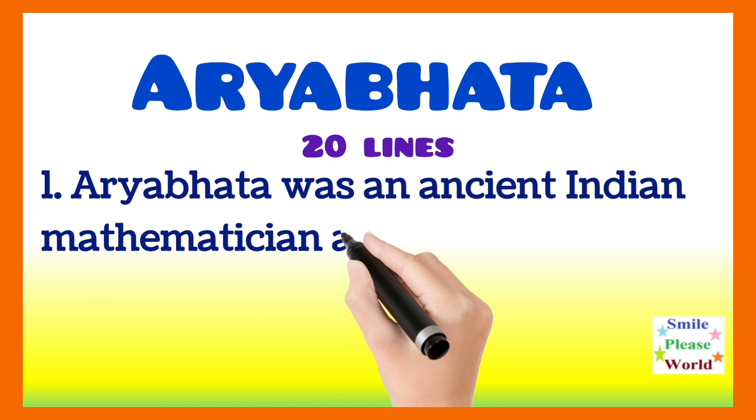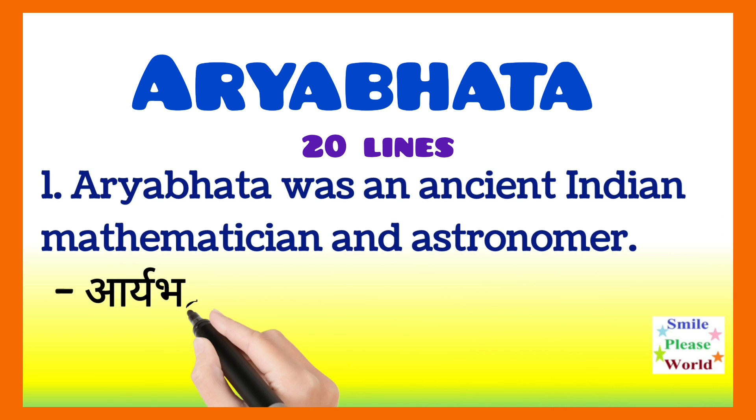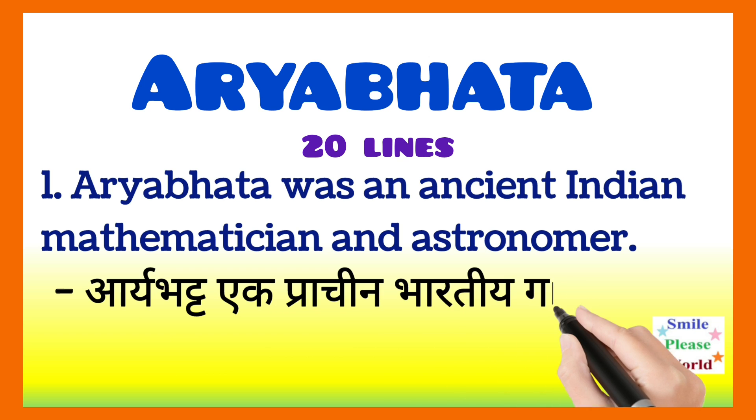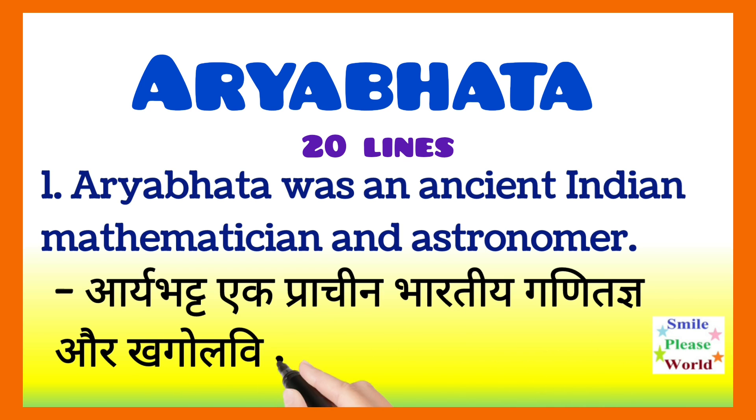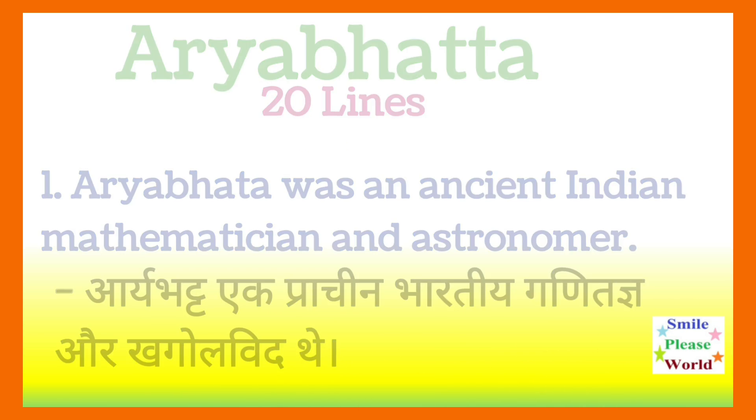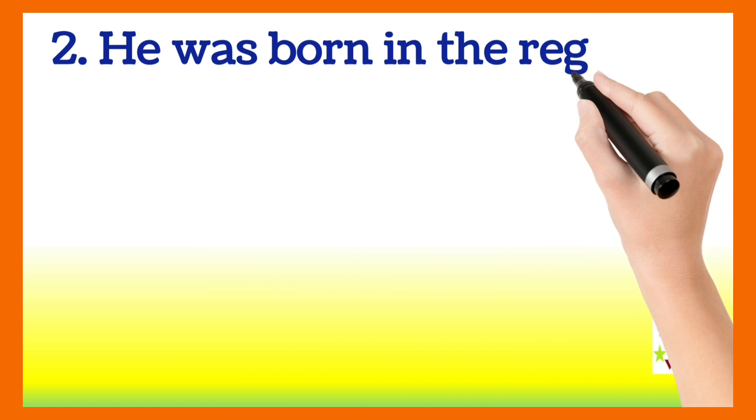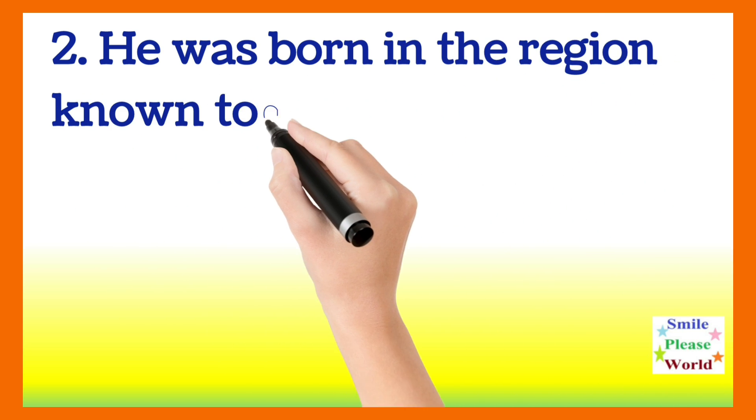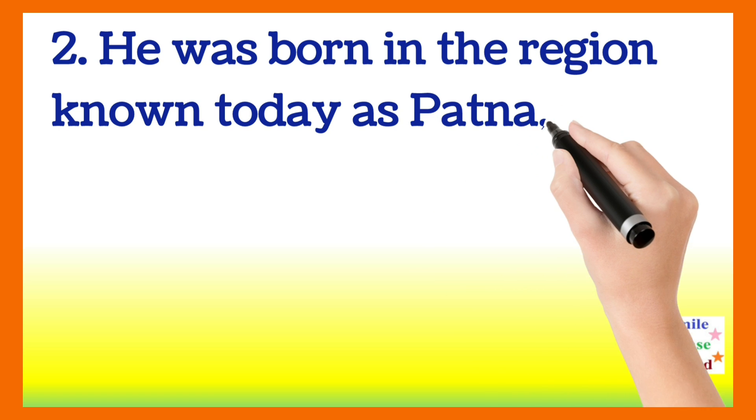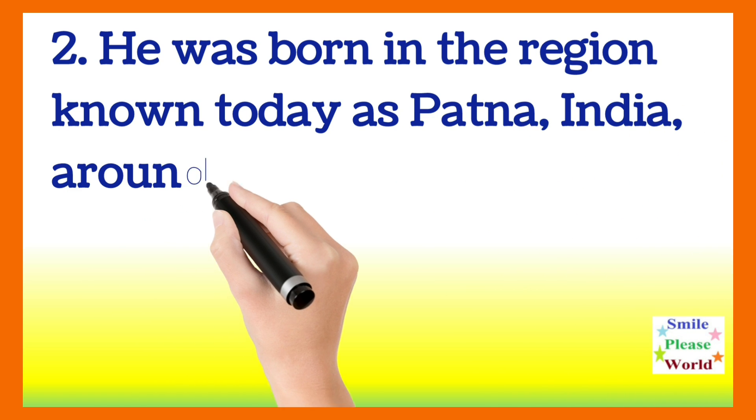Aryabhata was an ancient Indian mathematician and astronomer. He was born in the region known today as Patna, India around 476 A.D.